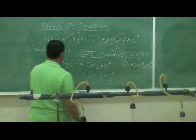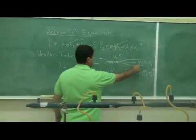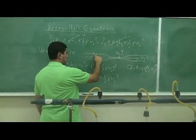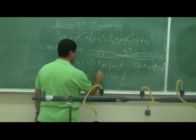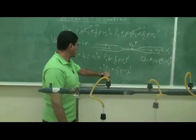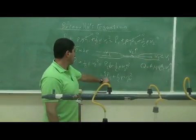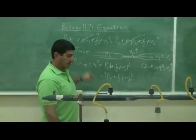We can call that P3 plus half rho V3 squared. In here, the velocity should go back down to what it was here, but even less than here, okay? So, when the velocity goes down, the pressure goes up. So, that means the pressure in this part of the tube should be even greater than the pressure in this part of the tube because the velocity is less.